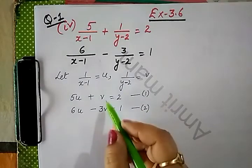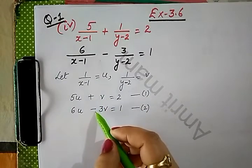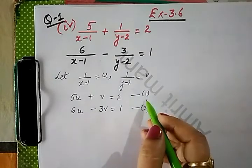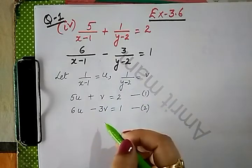Let us solve this. Hum dekh rahe hain, this v variable, ismein dono ka opposite sign hai. If we multiply equation number 1 by 3, then easily v cancel ho jayega.